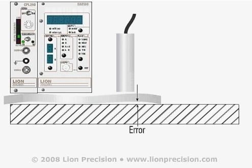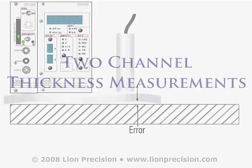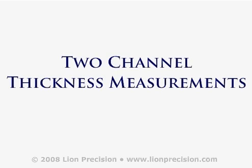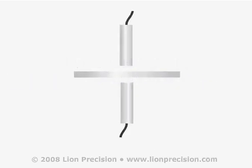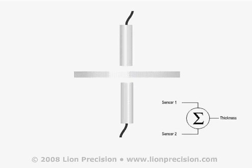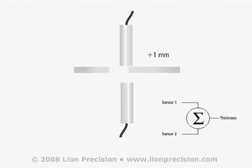This error can be avoided by using a two-channel method. Two-channel thickness measurements place the part to be measured between two sensors. The sum of the measurements from the two sensors provides the final measurement of thickness. If the part moves one millimeter toward the top sensor, its output will change by plus one, but it also moves one millimeter away from the bottom sensor causing a change of minus one. The sum of the two sensors remains unchanged, which eliminates the errors from single-channel problems with deformity and contact with the reference surface.